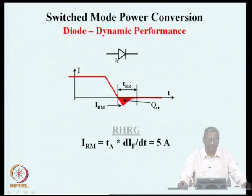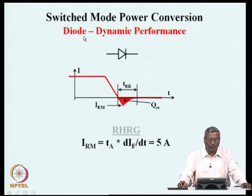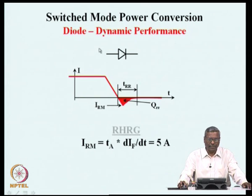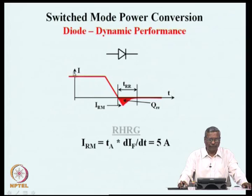We have to come back to the same topic. We are on the idea of dynamic performance of diodes. We had earlier seen the steady state performance of diode as a switch — those were the on-state performance, voltage drop, off-state performance, leakage current, power losses, and so on. Now we are looking at the dynamic performance. The dynamic performance relates to the switching performance: what happens during the transients when a diode moves from a conducting state to a blocking state?